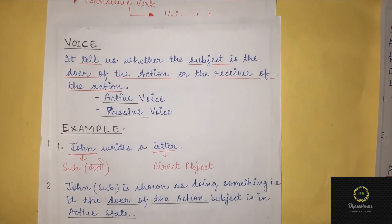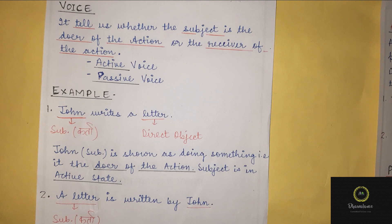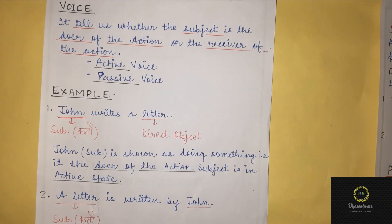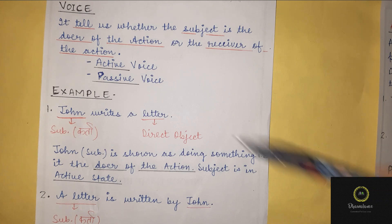Now let's see the second part — that is, voice. Voice tells us whether the subject, the karta, is the doer of the action or the receiver of the action. Receiver of the action means karta pe koi kaam ho raha ho. So, doer of the action means active voice, and receiver of the action means passive voice.